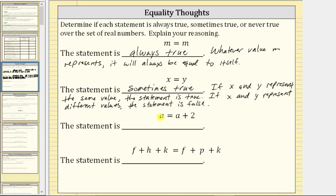Next, we have the statement or equation a equals a plus two. Whatever value a represents, a plus two is always going to be two more than a, and therefore the statement is never true. For our reasoning, we will say: whatever value a represents, a plus two is always two more.